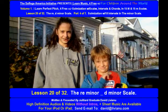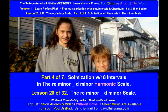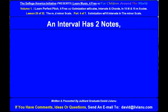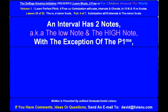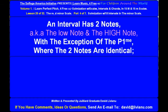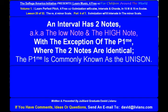Lesson 20 of 32: the Re minor / D minor scale, part 4 of 7. A musician works with 18 intervals in the Re minor / D minor harmonic scale. An interval has two notes, also known as the low note and the high note, with the exception of the perfect prime, where the two notes are identical. The perfect prime is commonly known as the unison.